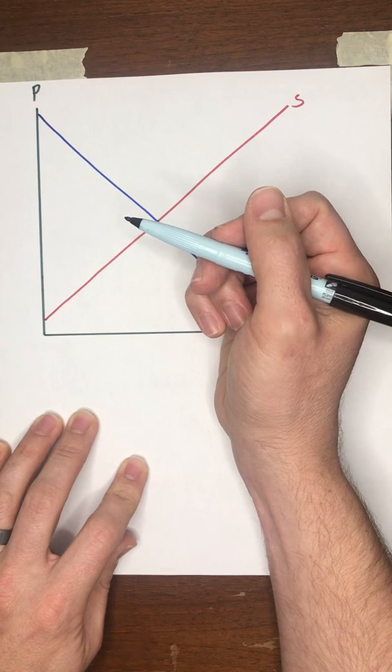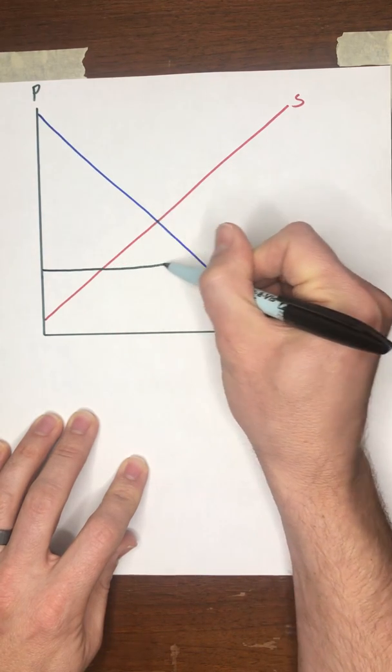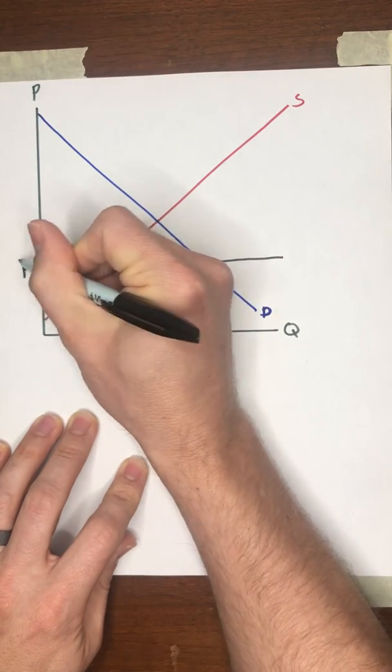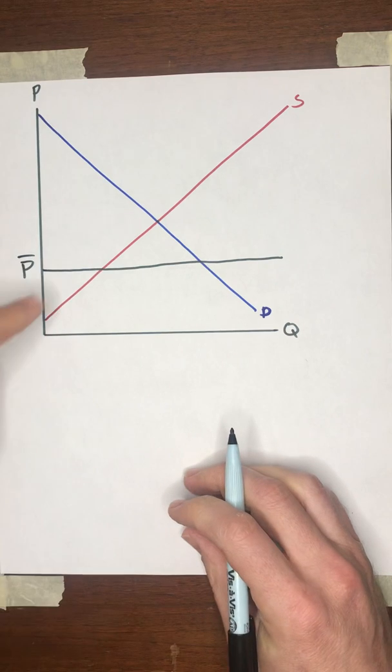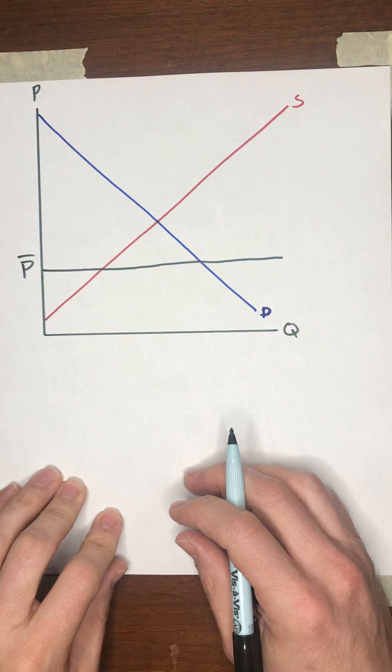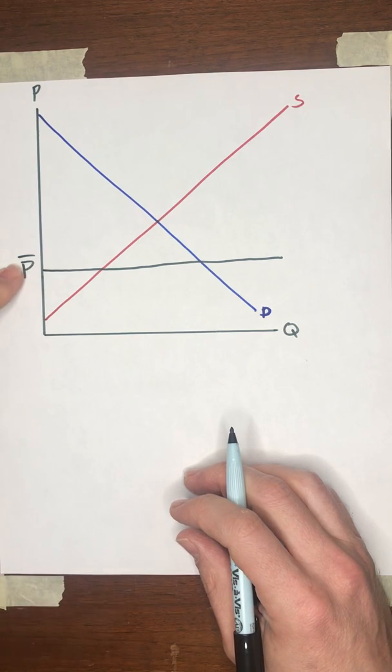I'm going to make it a fairly significant price ceiling. Put it well below the equilibrium. And we're going to call that price P bar. And no buyer is allowed to pay a price higher than P bar. No seller is legally allowed to charge a price that is higher than P bar. What's going to happen in this case?